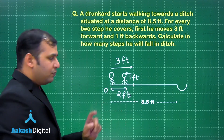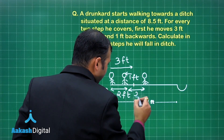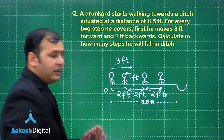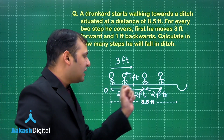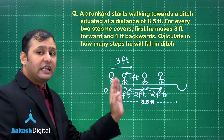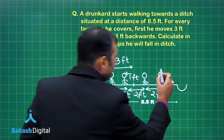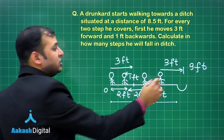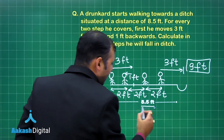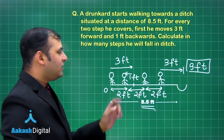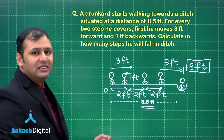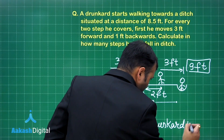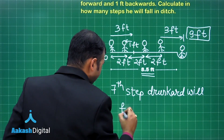After another 2 steps he moves another 2 feet forward, and again another 2 steps brings him another 2 feet forward. With 6 steps he has reached 6 feet from his original position. When he takes the 7th step, he moves 3 feet forward, reaching 9 feet from the origin. Since the ditch starts at 8.5 feet, he has already fallen in. Therefore at the 7th step, the drunkard falls into the ditch.